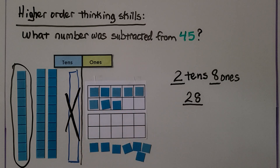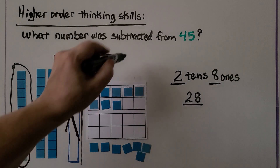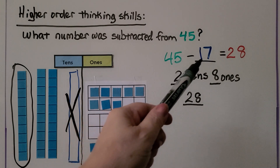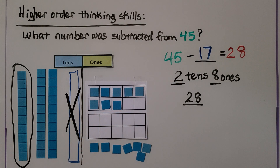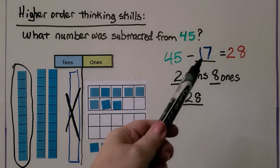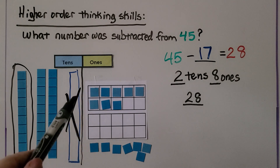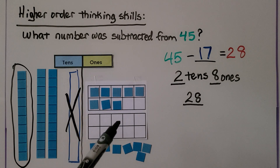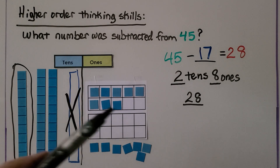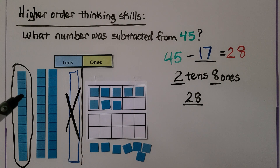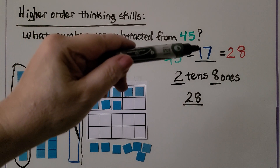We're taking away 1 10 and 7 1s. 1 10 and 7 1s is 17. That means 17 was subtracted from 45 to get 28. We regrouped a 10 as 10 1s, and we needed only 2 10s, 8 1s, so we took another 10 away — that's the 10 in 17.